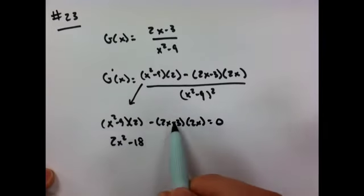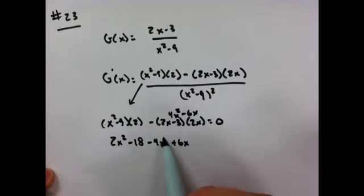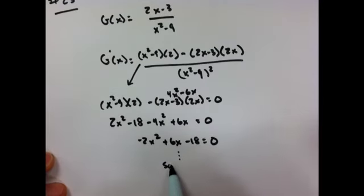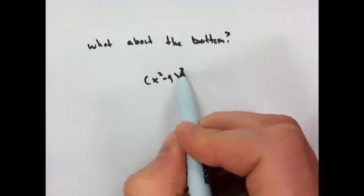The top set equal to zero would tell you the first part, the criteria. You could use the quadratic formula to solve it. The bottom set equal to zero would tell you the second part, when the derivative does not exist.